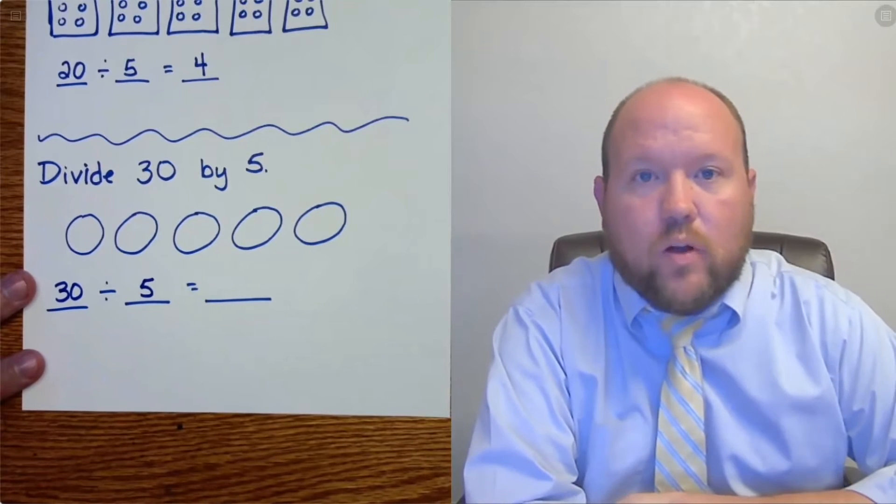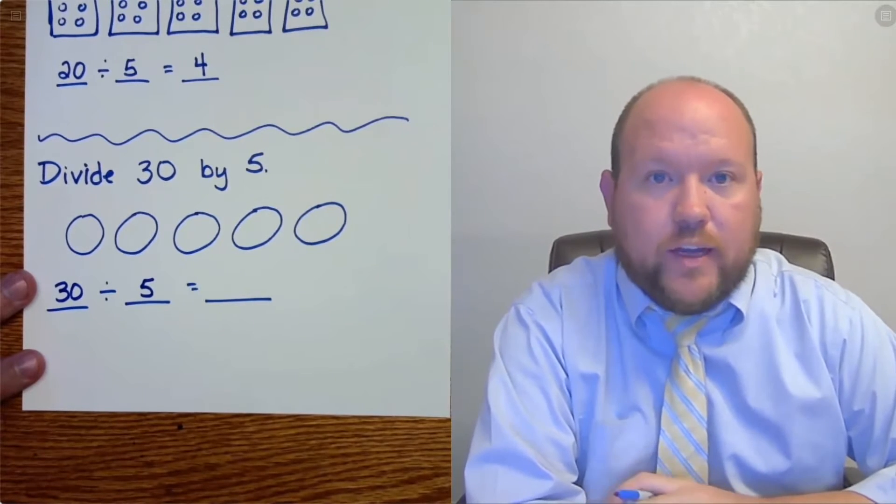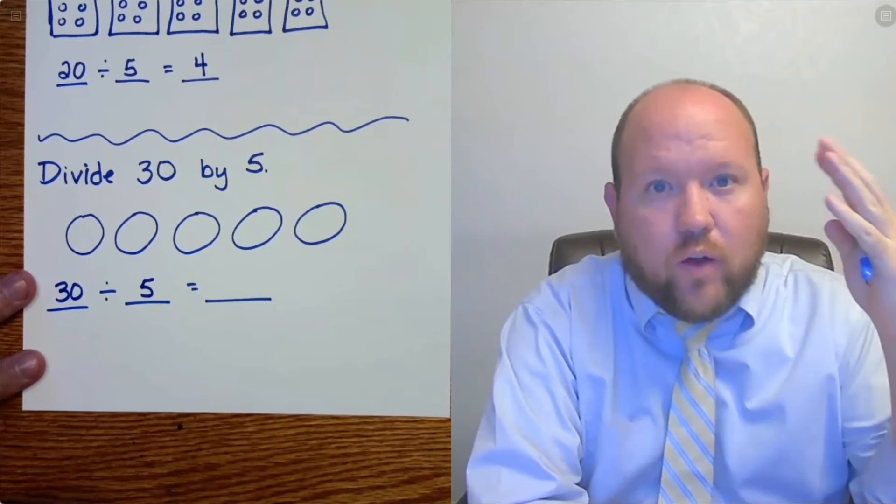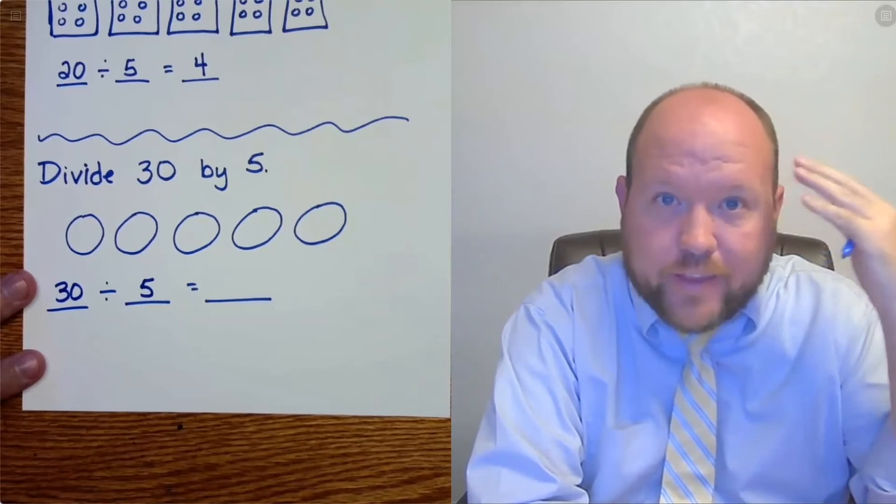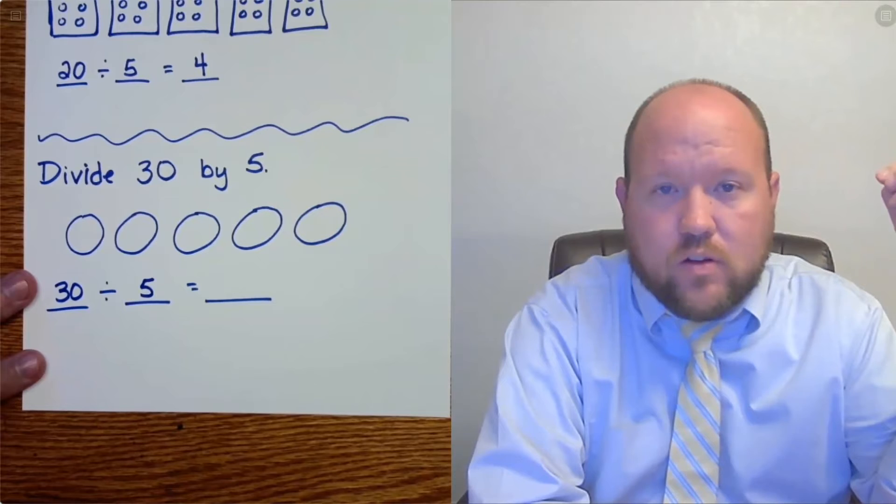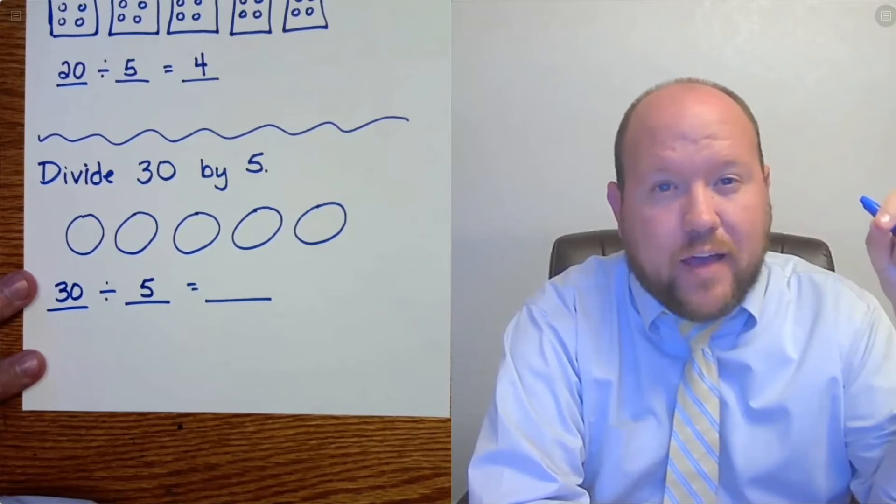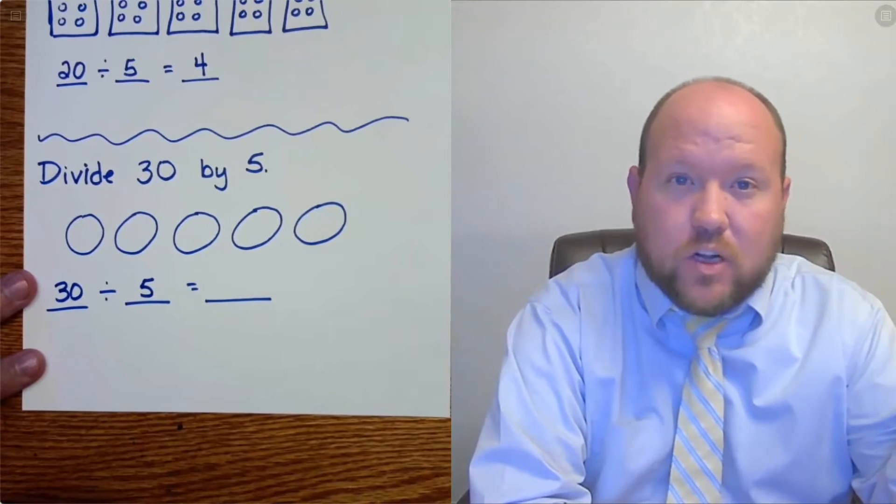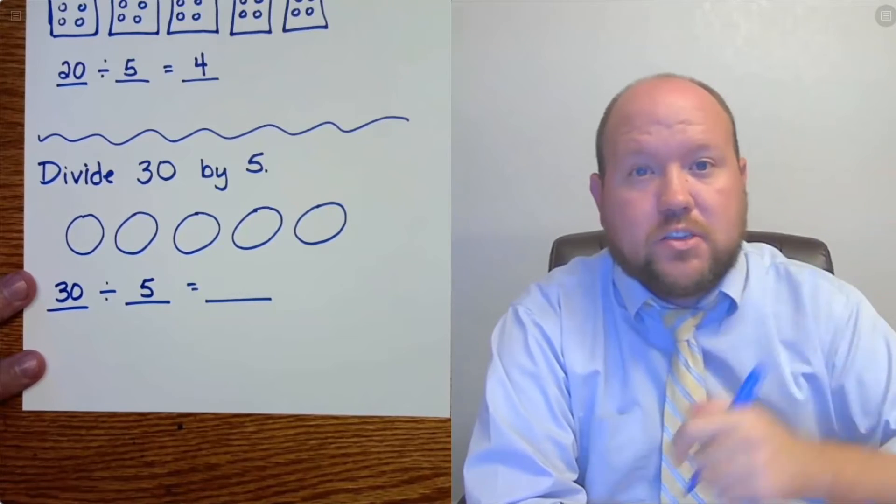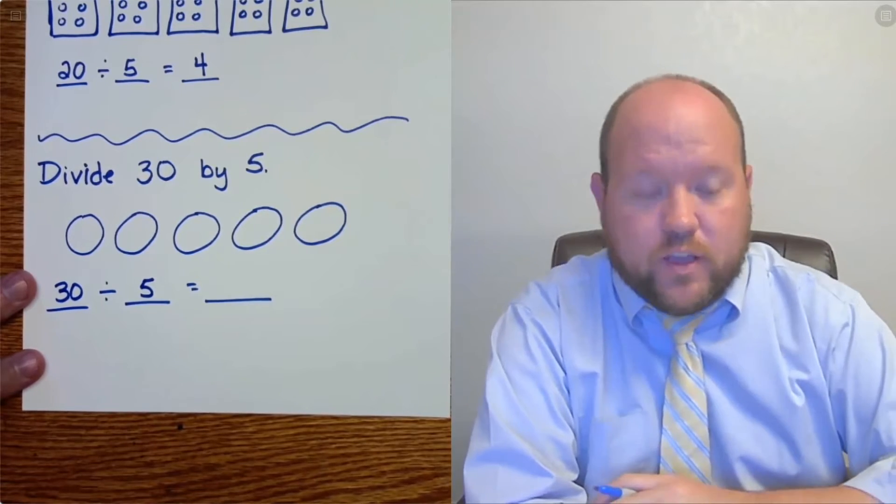Now we want to get to where we're able to do this without any help. We just have it stored here. We just know it. Now if you don't have it stored there, one way to do it is to think the other way. 5 times what equals 30. So if you don't know what 30 divided by 5 is, but you know 5 times something equals 30, whatever that something is can help you. But if you're still struggling and this is difficult for you, you can do what I've done.